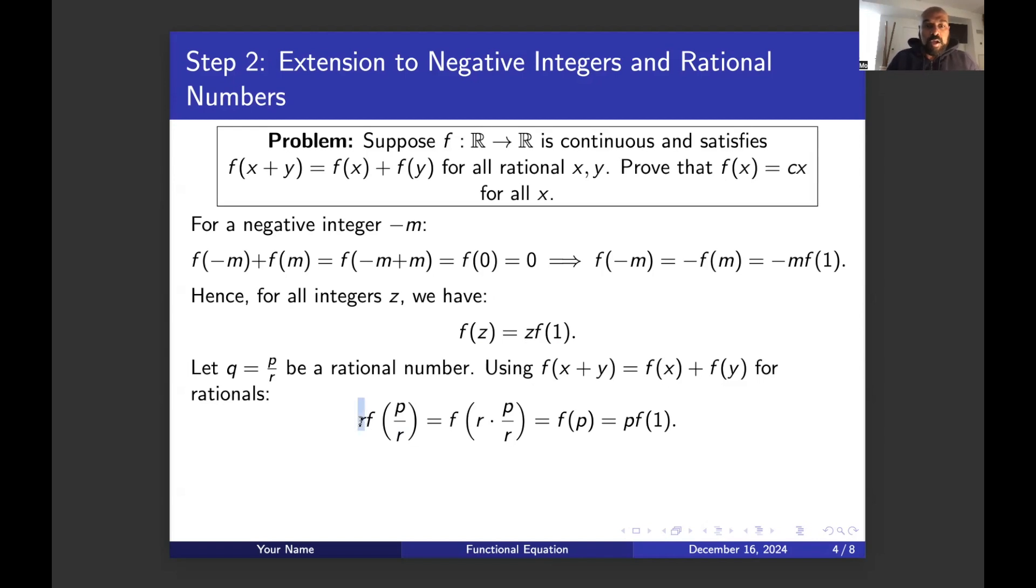So now r copies of f of p over r by applying this thing r times using the fact that r is a positive integer. That's going to be f of r times p over r. But now r times p over r is actually p itself and we know p is an integer. So f of p is what we proved earlier equal to exactly p times f of one.